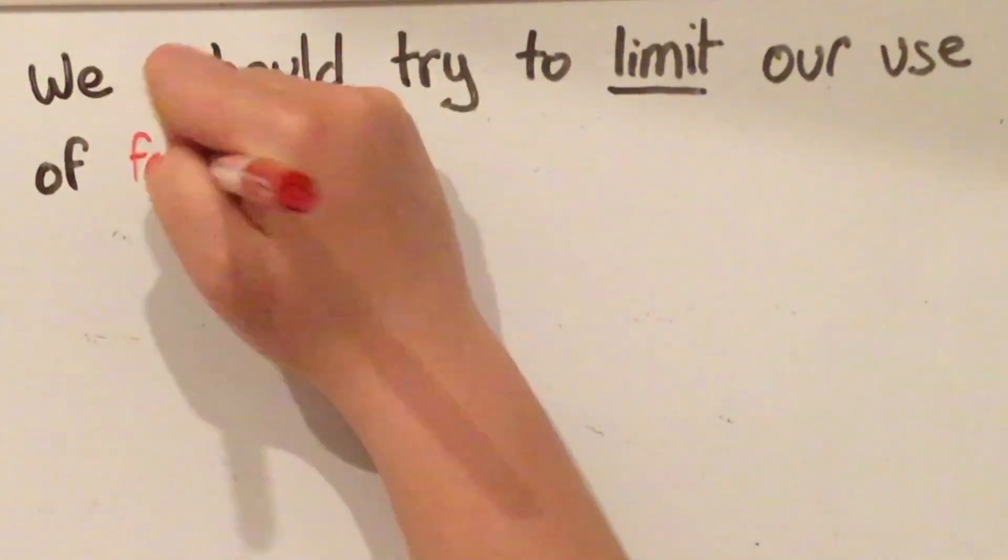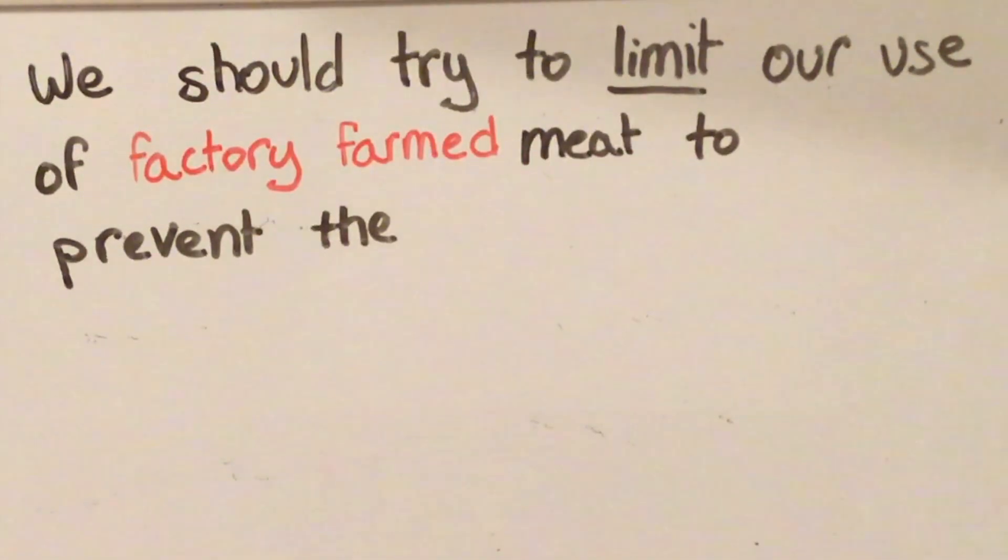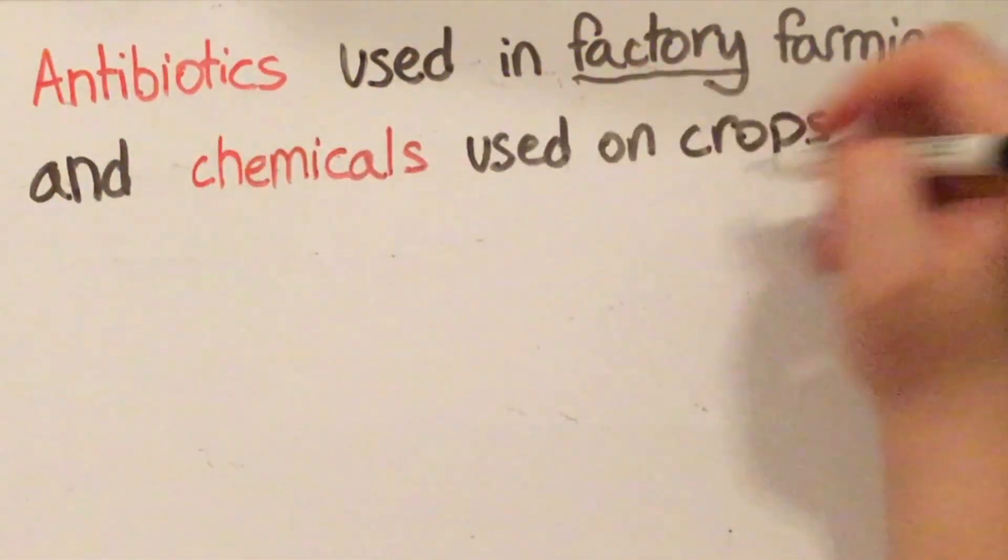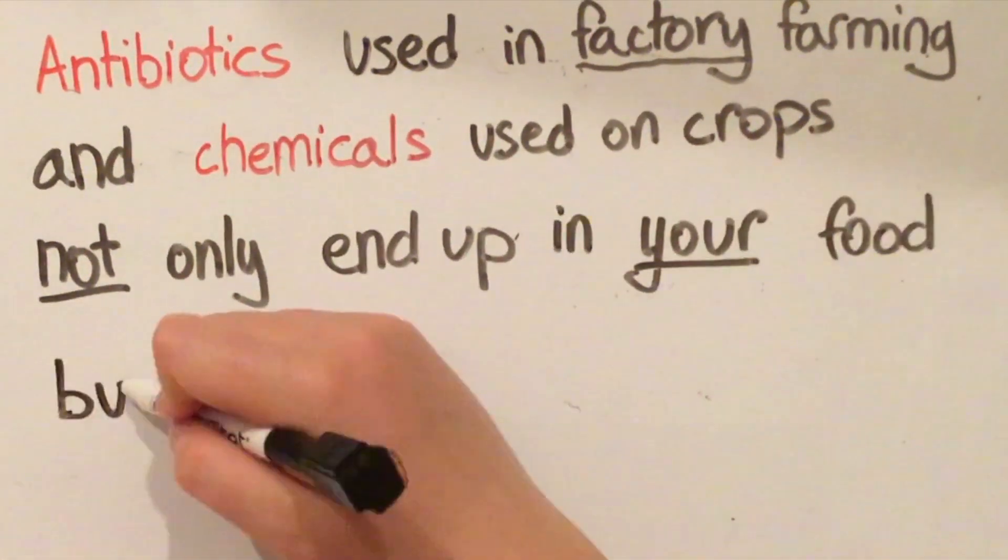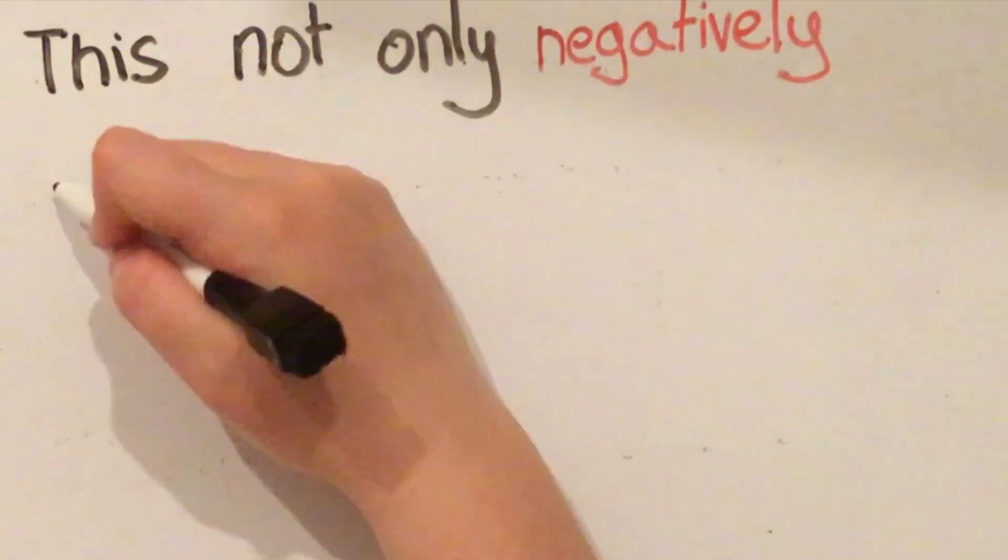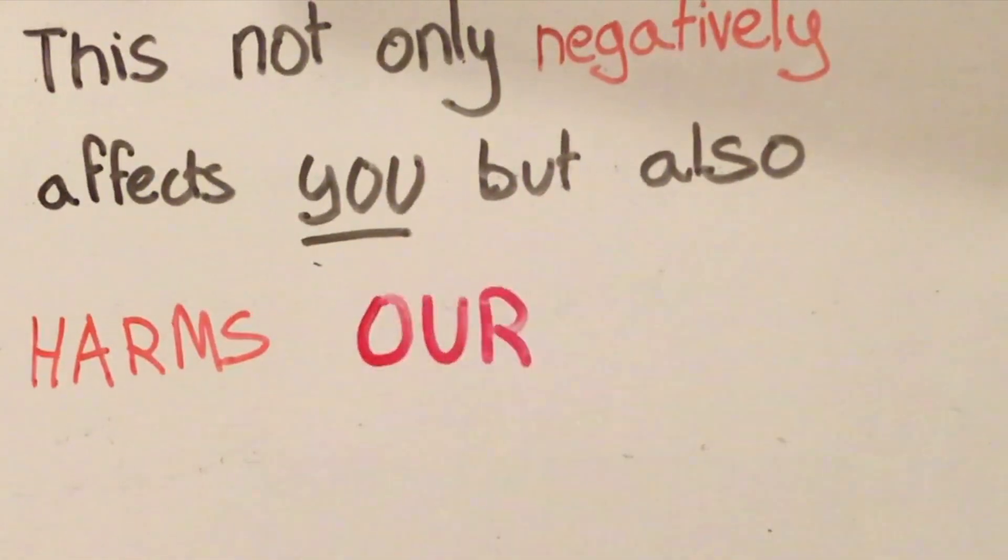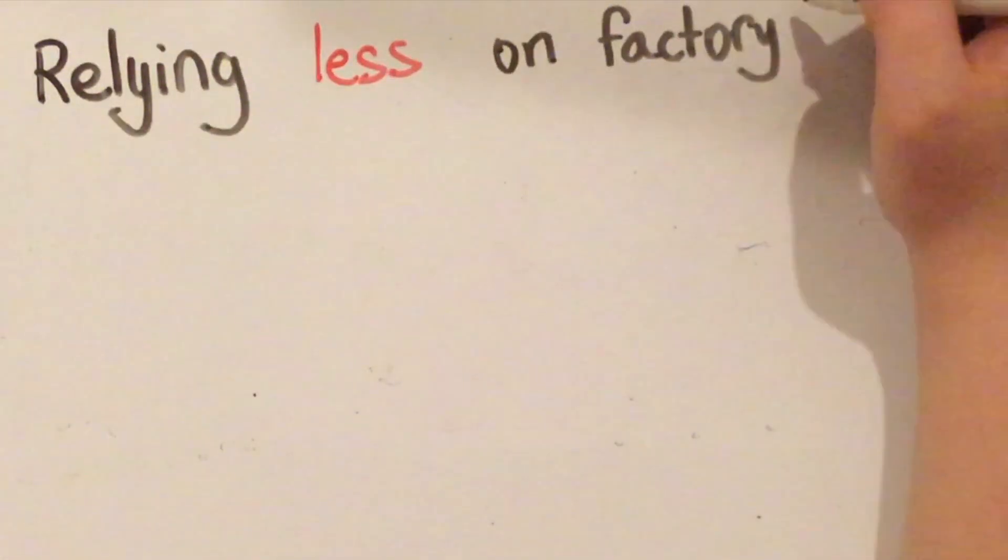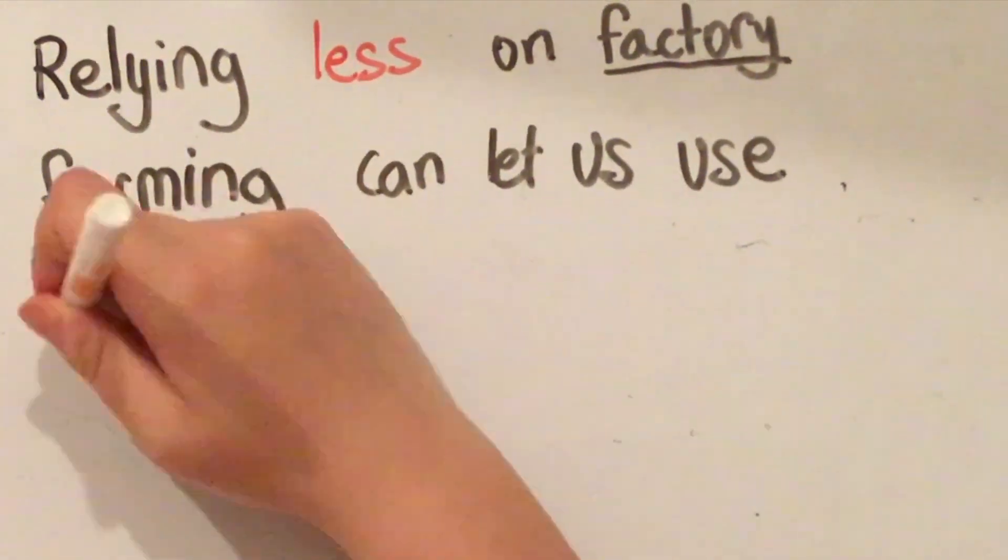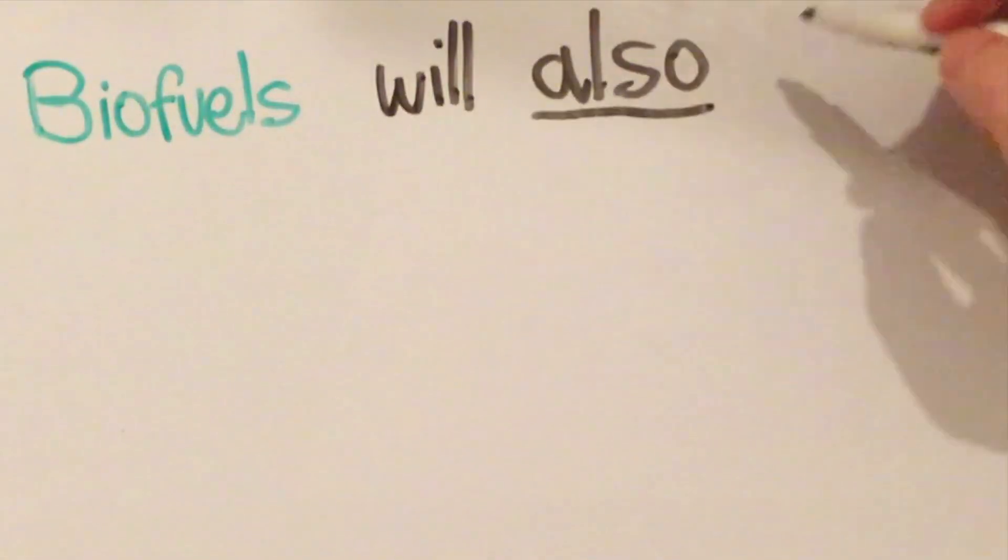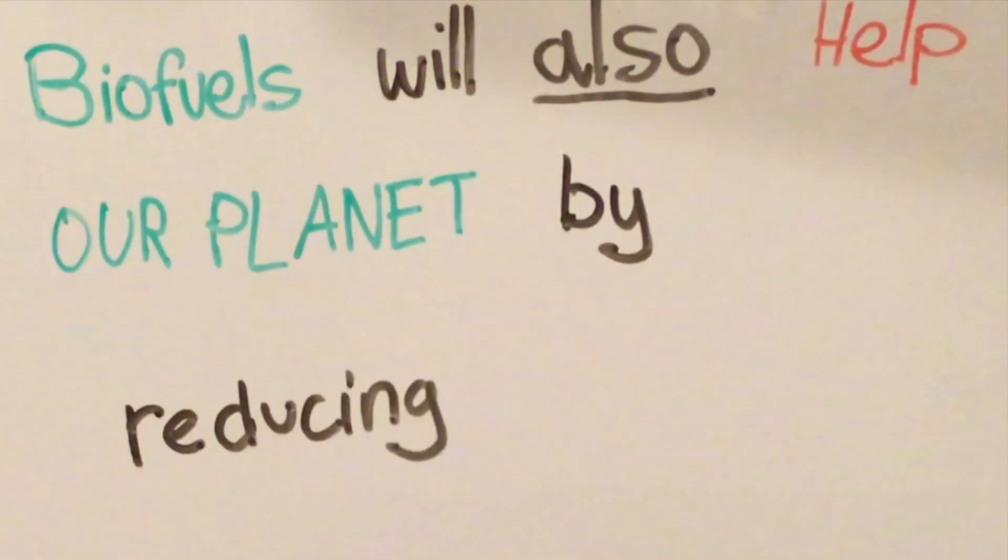We should try to limit our use of factory farmed meat to prevent the suffering of these animals. Antibiotics used in factory farming and chemicals used on crops not only end up in your food but also in the environment. This not only negatively affects you, but also harms our planet. Relying less on factory farming can let us use corn for making biofuels instead of for animal feed. Biofuels will also help our planet by reducing pollution.